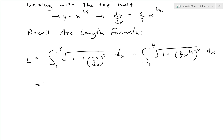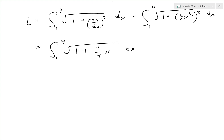Simplifying further: 1 plus, since 3 over 2 squared is 9 over 4, and x to the power of 1 over 2 squared is just x to the power of 1, we get the integral from 1 to 4 of the square root of 1 plus 9 over 4 times x, dx.